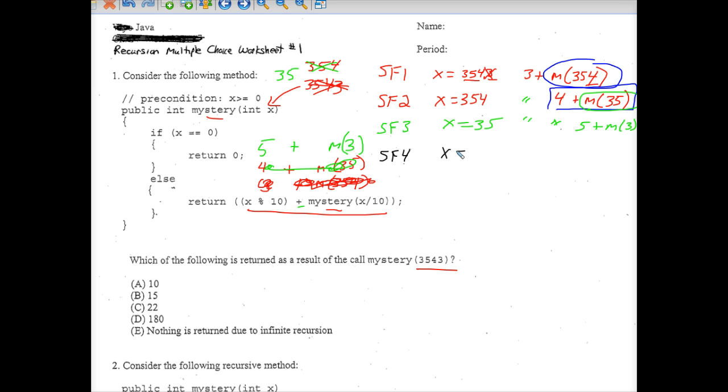x is now 3. Is 3 equal to 0? No. What's 3 mod 10? 3 mod 10, it's 3. And what's 3 divided by 10? 3 divided by 10 is 0.3. You chop off the decimal, you're left with a 0. So you end up with 3 plus the m of 0 in stack frame 4.